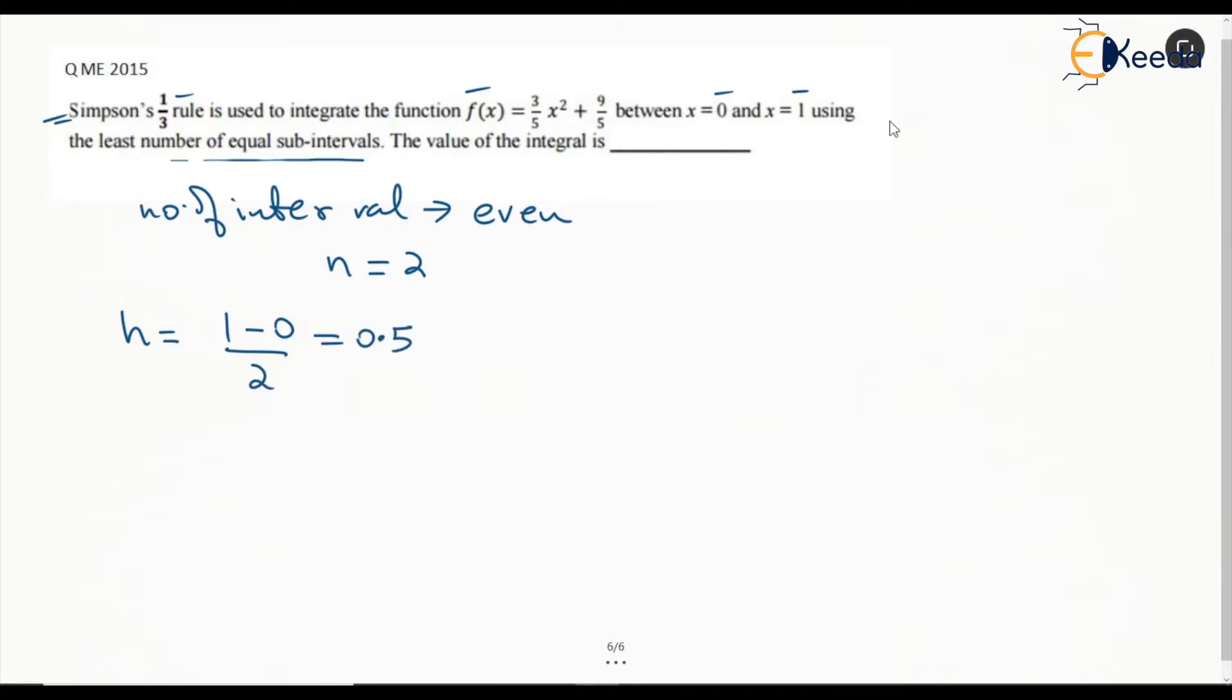If you are considering x, the values are going to be 0, then 0 plus 0.5 which is 0.5, and then again 0.5 plus 0.5, so this will become 1.0. We can clearly see this is the first interval and this is the second interval, so the number of intervals becomes 2.